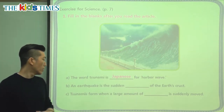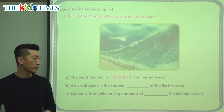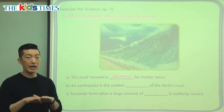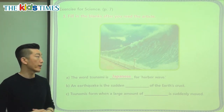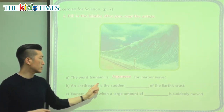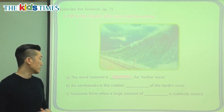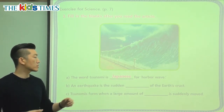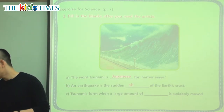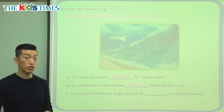The second question: 'An earthquake is the sudden blank of the earth's crust.' We said that the crust is the outer rock layer. 'Sudden' means without warning — it just happens quickly. So an earthquake is the sudden what of the earth's crust? How is it moving? It is the sudden shaking of the earth's crust.